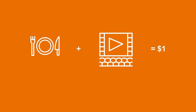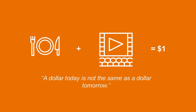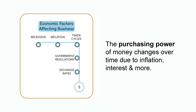My grandfather always used to tell me that when he was my age, he could go out for a full lunch and see a movie for only $1. Nowadays, you would spend significantly more than that, and it's like this in most areas of life. But why is this the case? The reason is that a dollar today is not the same as a dollar tomorrow. The purchasing power of money changes over time as a result of things like inflation and interest. Companies need to keep this in mind when making long-term decisions that impact their cash flows.